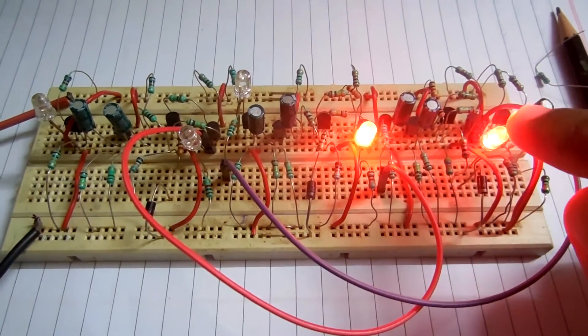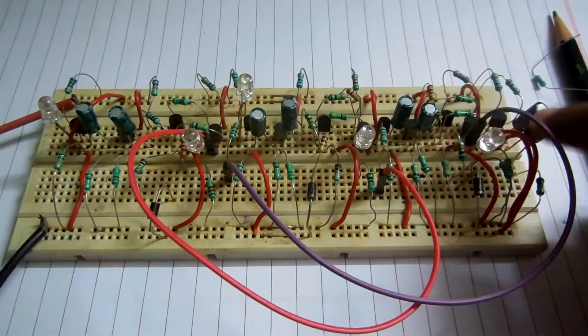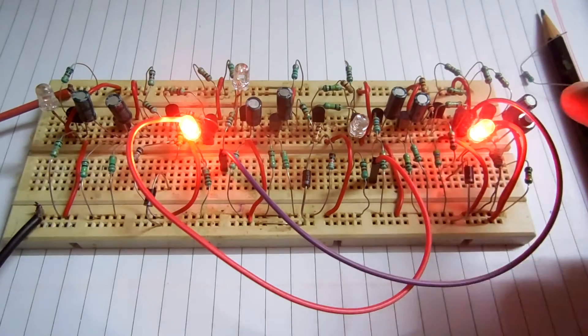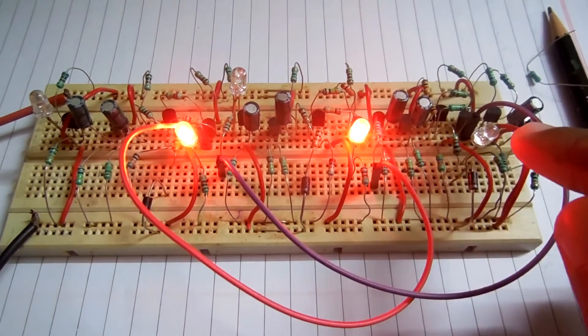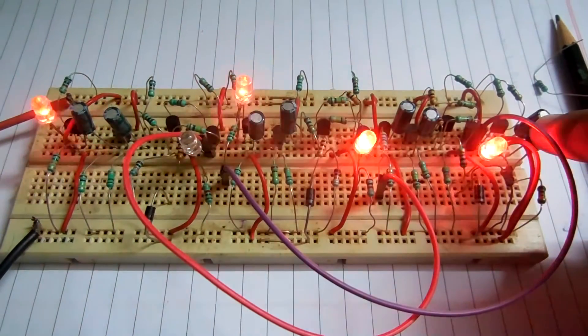Now when we rotate, this 1 will shift here and this 1 will shift here, that means this 0 will shift here. This 0 is shifted here and this 0 is shifted here now. So this is the way it shifts the data.